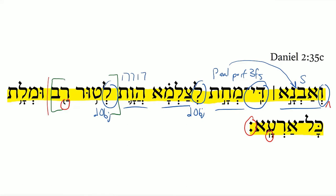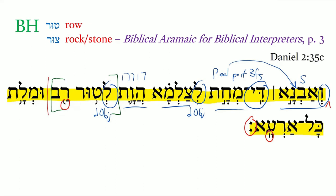Tet-vav-resh. In biblical Hebrew, it's not a related word — it means 'row,' not a column, but a row. What we see as a cognate in biblical Hebrew is the alternation of tet in Aramaic and tzadi in Hebrew. You can see this alternation of consonant on page three in 'Biblical Aramaic for Biblical Interpreters.' Where in biblical Hebrew, 'tzur' means rock or stone. There's also a word that carries a similar meaning to this Aramaic word in biblical Hebrew: 'har,' meaning mountain. So 'tur,' 'tzur,' and 'har' in biblical Hebrew — there are many more instances of those than the two instances of 'tur' in biblical Aramaic, which mean mountain.